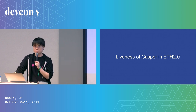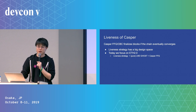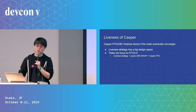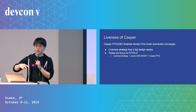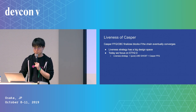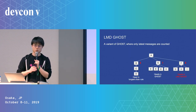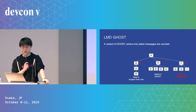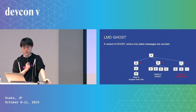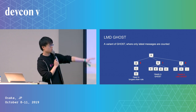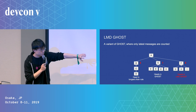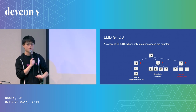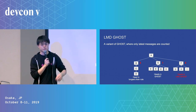Moving to liveness—liveness has many design strategies, so today I'll focus on Ethereum 2.0 liveness. In 2.0, the liveness strategy is simple: LMD ghost plus Casper FFG. LMD ghost is a variant of GHOST where only the latest message is counted. In traditional longest chain, one chain leads; in normal ghost, another leads; but in LMD ghost we only count the latest message, so a third chain is ahead.